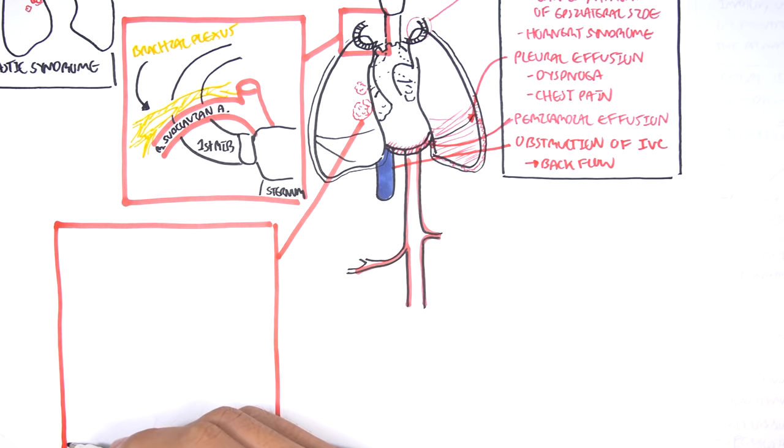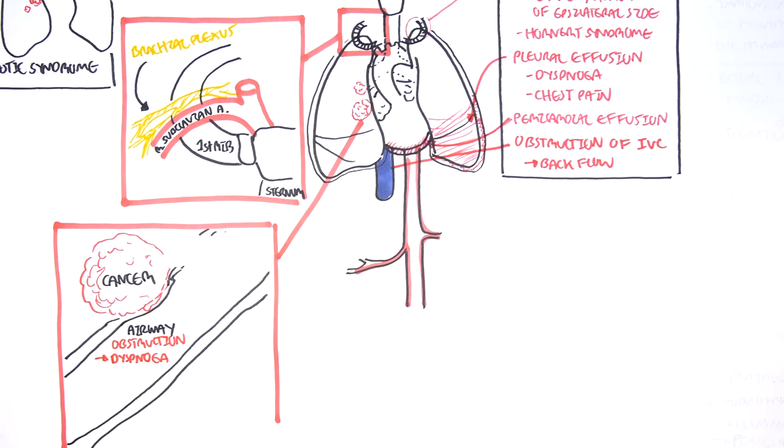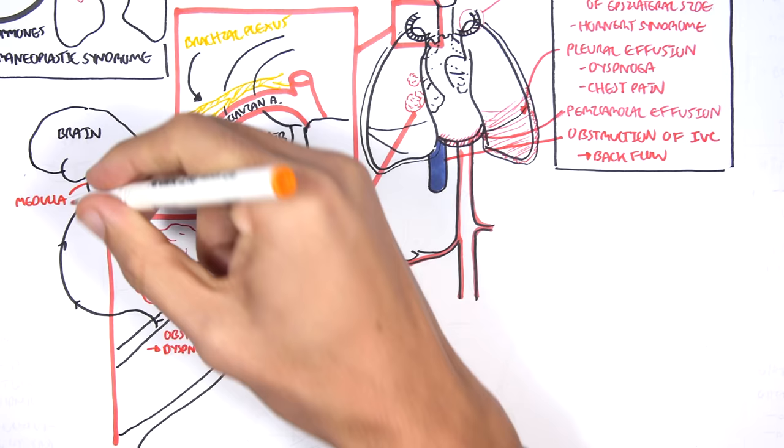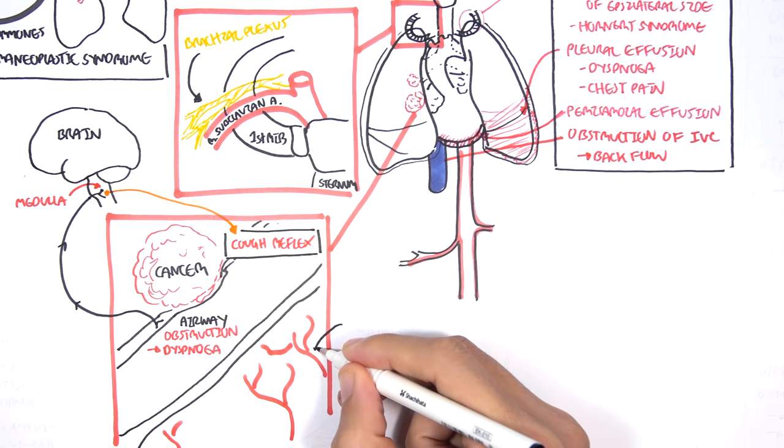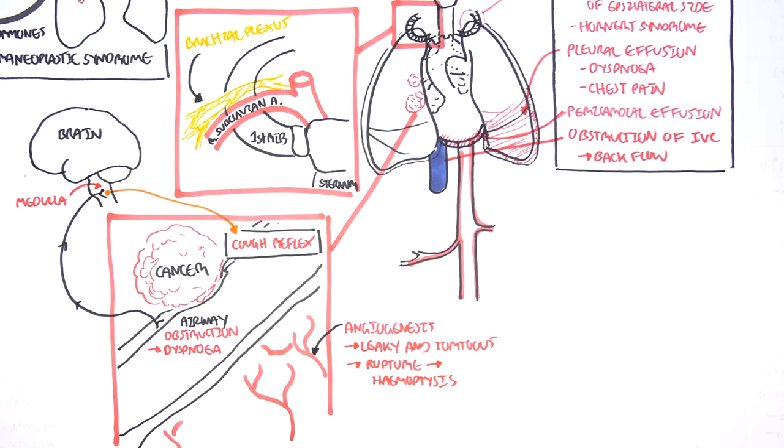Let us look at the airway involvement now. The airways of the lungs are the bronchi and the bronchioles before it terminates at the alveoli. Cancer can cause airway obstruction as it impedes air flow. Airway obstruction leads to dyspnea. When there is airway obstruction or irritation, this actually sends sensory information to the brain and triggers the cough reflex. That is why in presentation, patients have dyspnea and cough. Cancer or tumor also stimulates angiogenesis, which is blood vessel growth. However, angiogenesis forms leaky and tortuous vessels which when rupture can lead to hemoptysis.